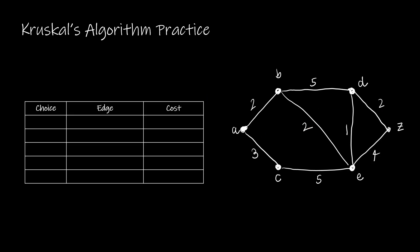Looking at our first practice together, I created a table, mostly for my benefit so that I can see the choices, but it also helps you stay organized as you're working through the algorithm. I'm going to start by choosing the cheapest weight. I haven't been asked to start at a specific vertex because with Kruskal's algorithm, you're really just going for the cheapest weight first. My edge here would be DE with a cost of one.